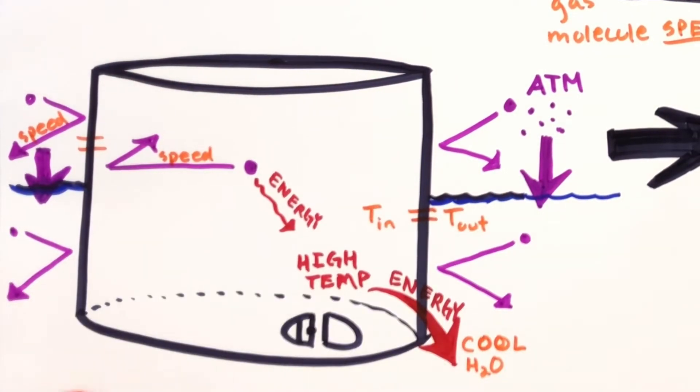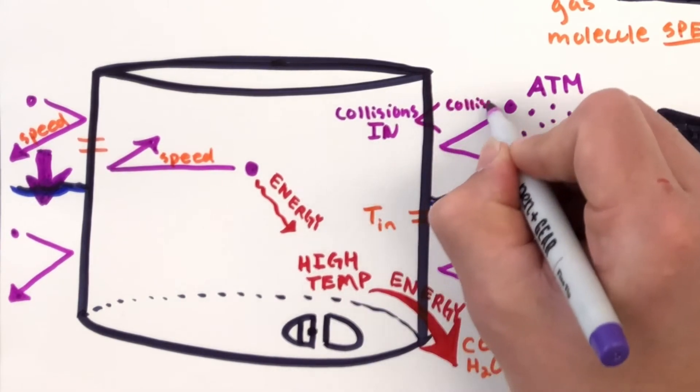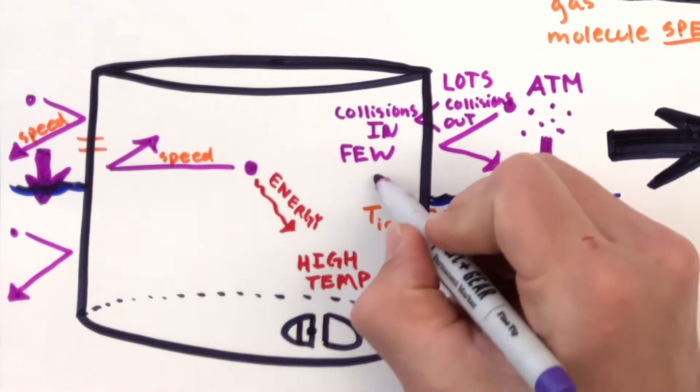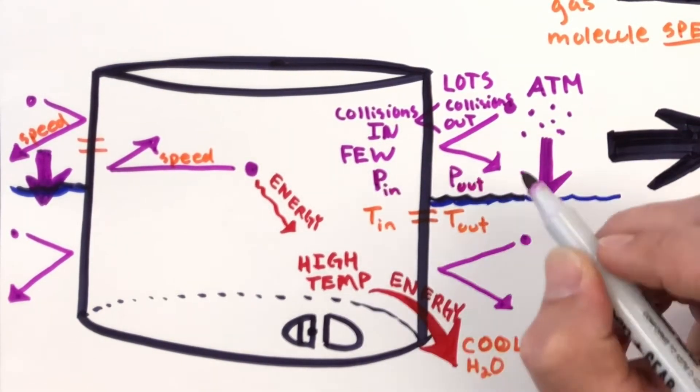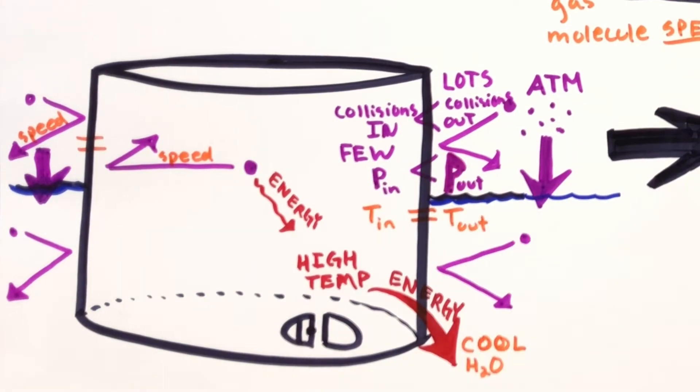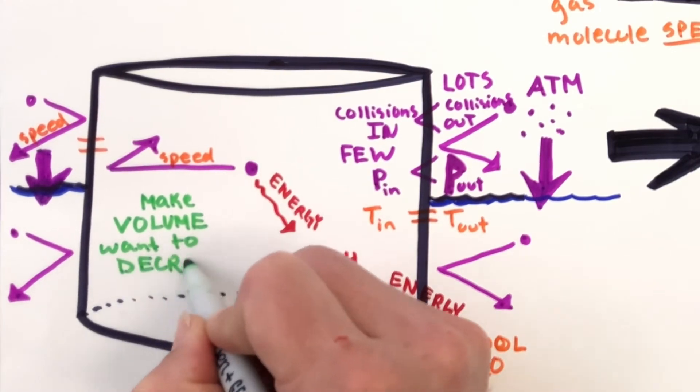So our gas molecule now is going to have less collisions inside than the outside. It can't collide with all the walls and keep the water out the same. So the pressure inside then will decrease. We'll have a greater pressure outside as our one little gas molecule there slows down. And that's going to make the volume want to decrease inside the can.